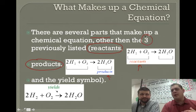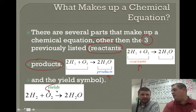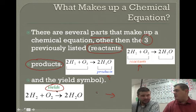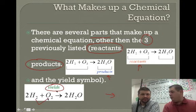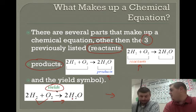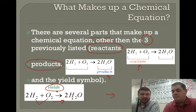Reactants, products, and then very important is what we call the yield symbol. Kind of like an equals sign, but it's an arrow because it's showing that the reaction is taking place in that direction. And so when those, in this case we've got two reactants, those two reactants combine to form or to yield this certain product. So that is an overview of those three things that are involved in every reaction. Every chemical equation has those.